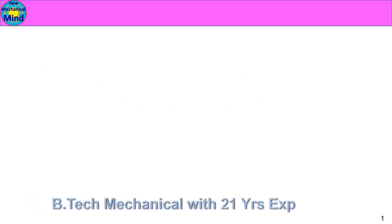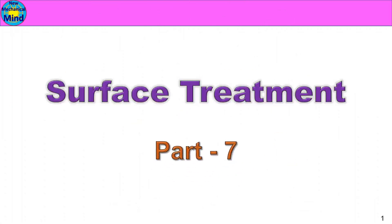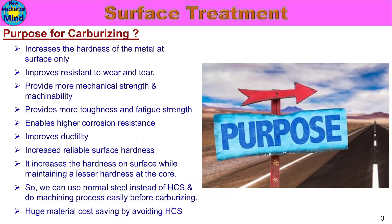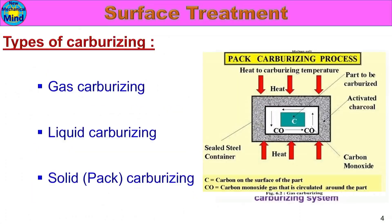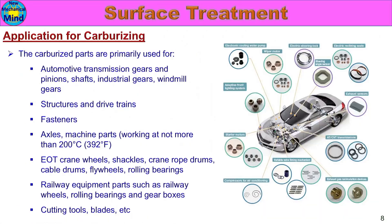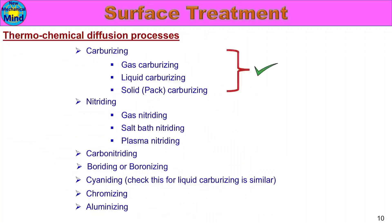Hi friends, welcome to New Mechanical Mind. Thank you for your channel support. In this video we will see surface treatment part 7. Topics covered include: what is carburizing, purpose for carburizing, types of carburizing — gas carburizing, solid pack carburizing — and application for carburizing. We will also look at types of surface modification process and the thermochemical diffusion process, including the carburizing process.